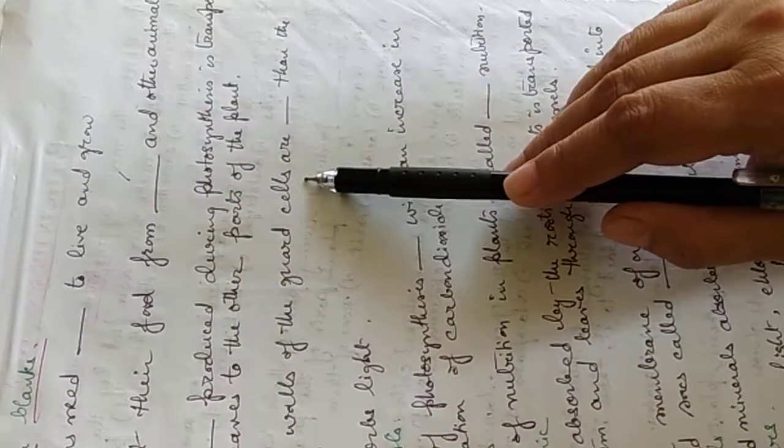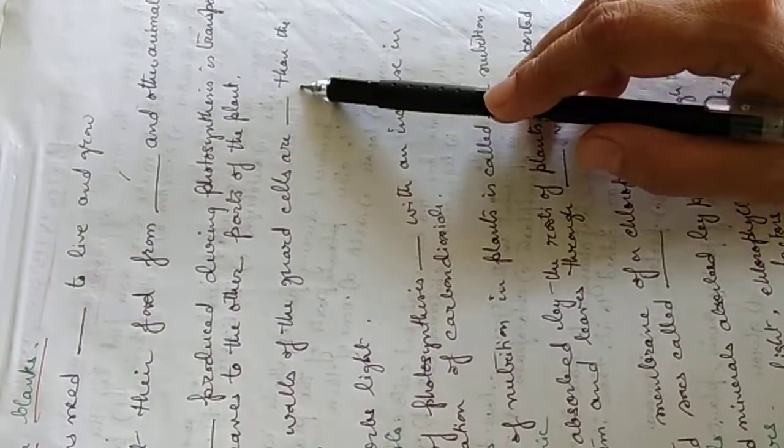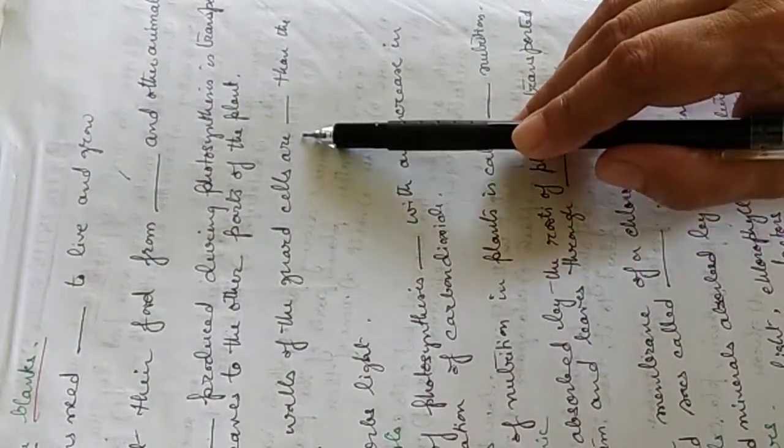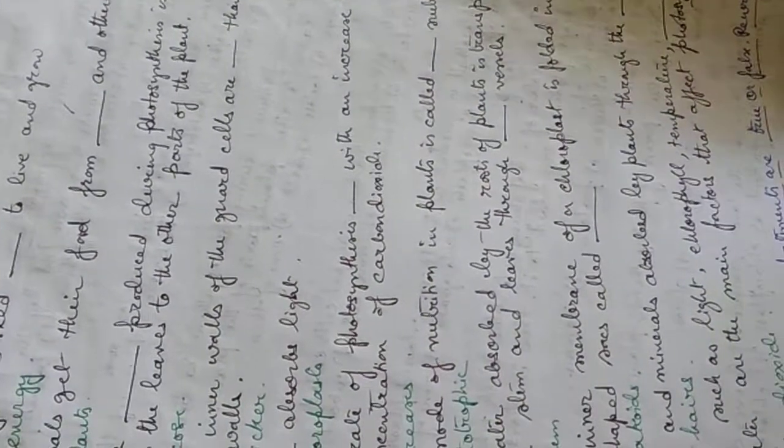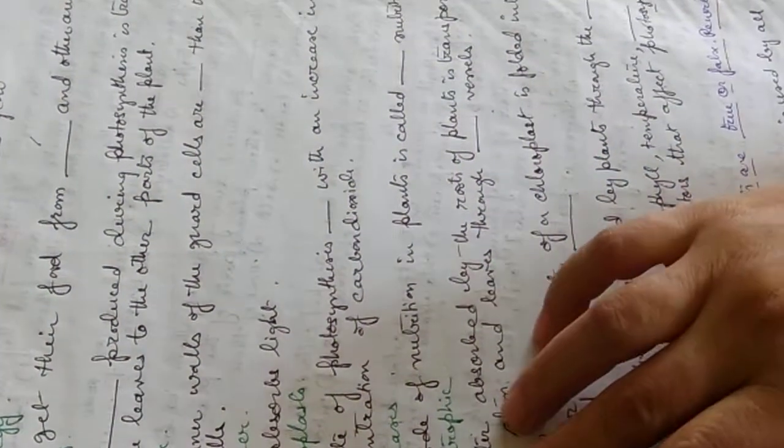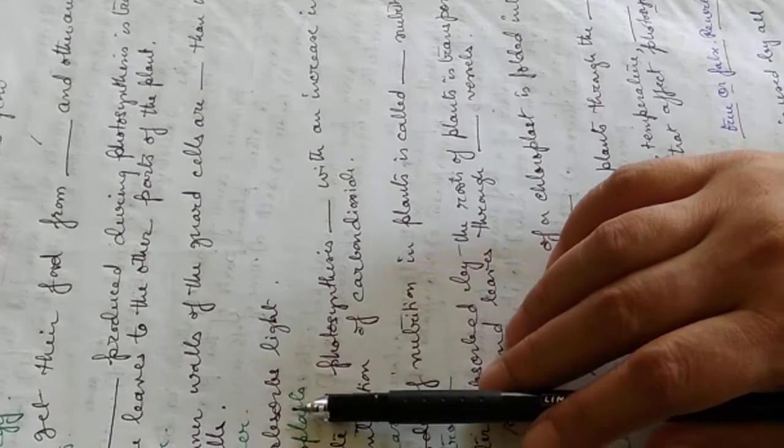The inner walls, the guard cells are dash than the outer wall. If they are thicker, answer is thicker. Fifth question, dash absorbs light, chloroplast.